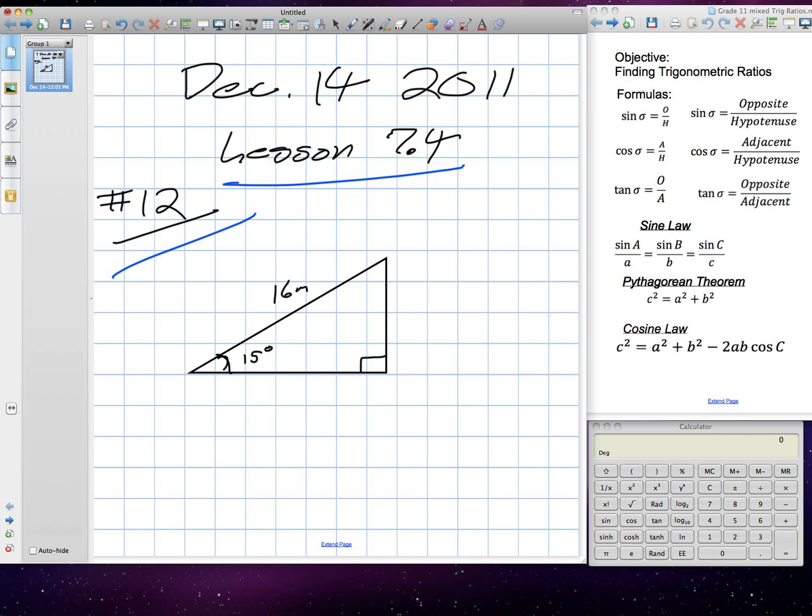So, question 12 from lesson 7.4, we're going to take up this question. Question says to solve the triangle. If you have any question that says solve the triangle, that means all sides and all angles.